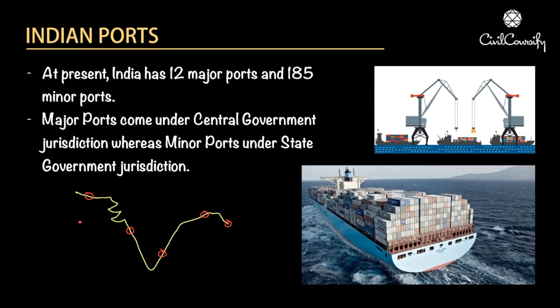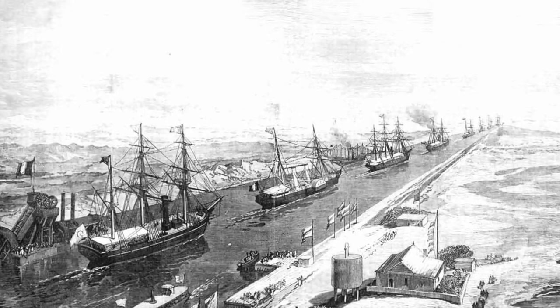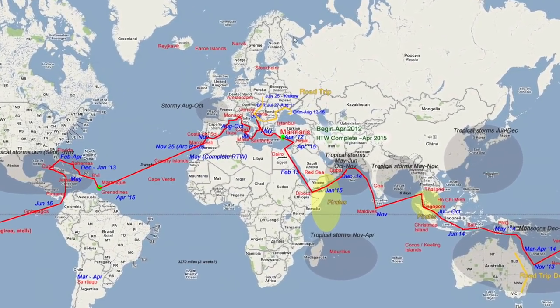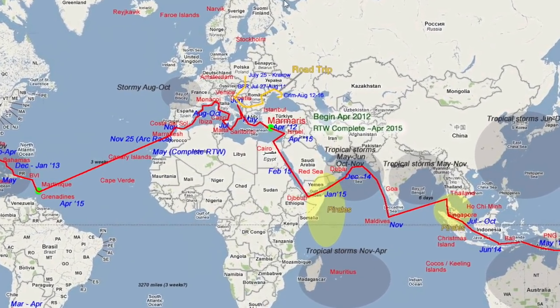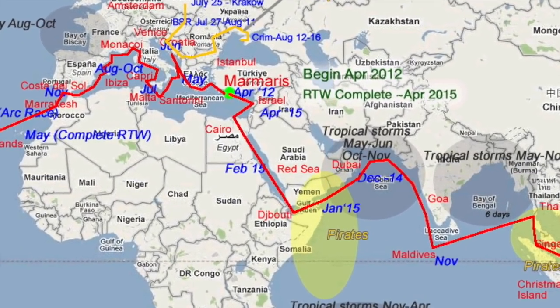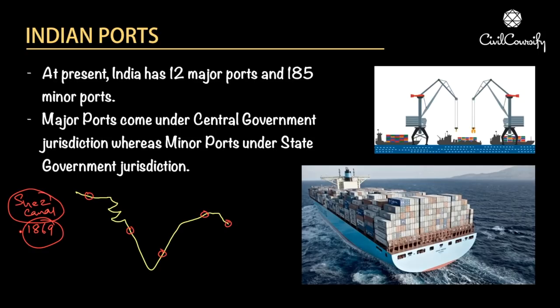The Europeans came to India circumventing the continent of Africa. But in 1869, the Suez Canal was opened, and this led to the shortening of the path between Europe and India. This is because the ports of Karachi and Mumbai became very important as the distance was shortened.